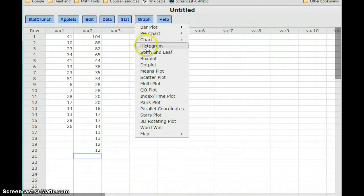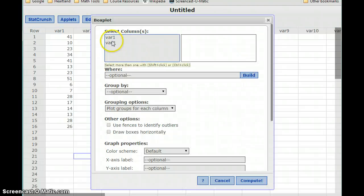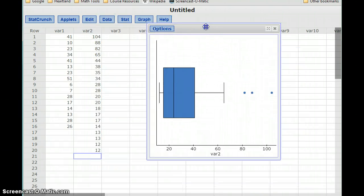Again, I've already got this data entered into StatCrunch. So I can just select box plot, var 2, select use fences to identify outliers, draw this horizontally, and I generate that box plot.